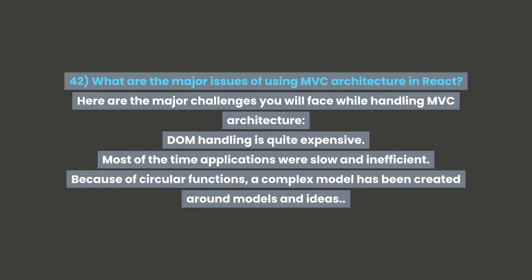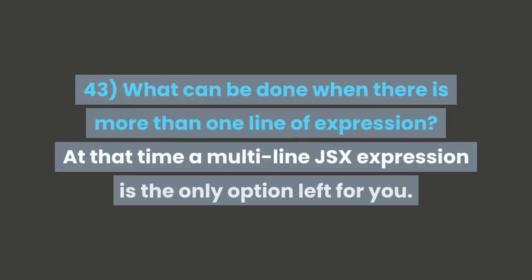DOM handling is quite expensive. Most of the time, applications were slow and inefficient because of circular functions. A complex model has been created around models and ideas. Question 43: What can be done when there is more than one line of expression? A multi-line JSX expression is the only option left for you.